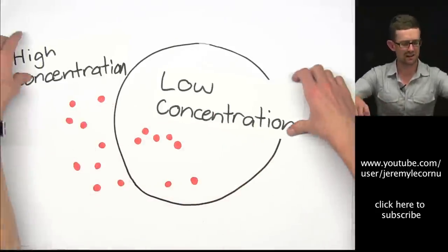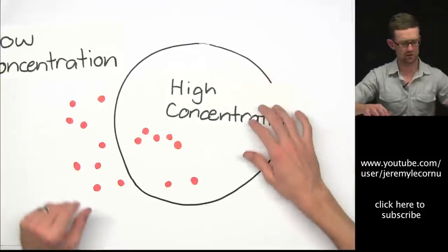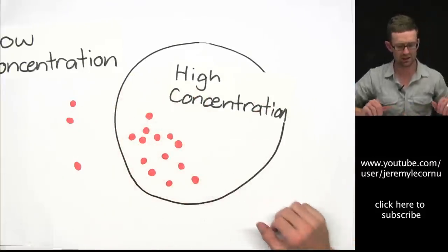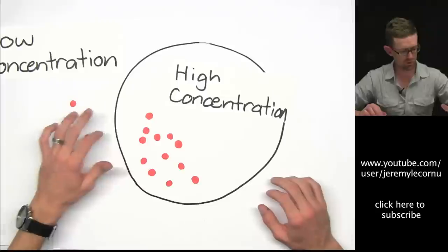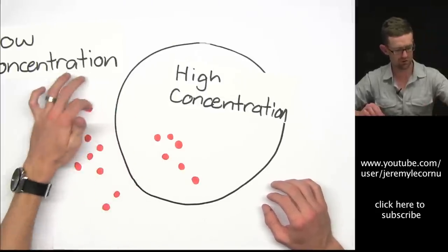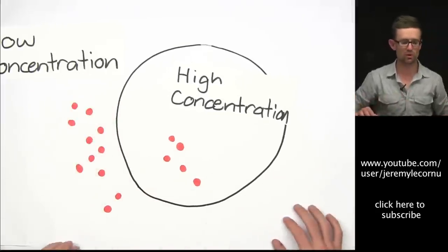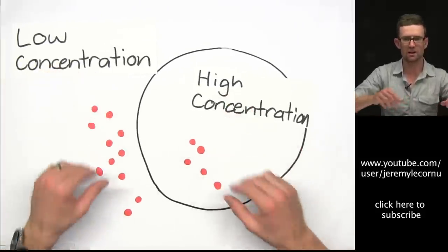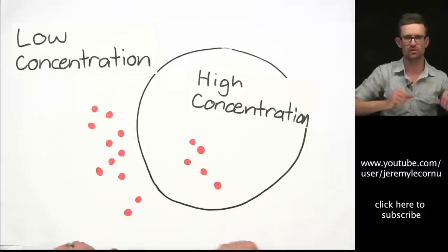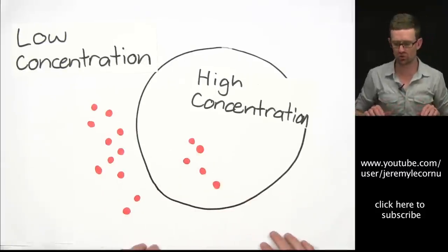Now that exact same scenario can happen reversed, where we can have particles moving from a higher concentration inside of the cell to a low concentration outside of the cell by diffusion. So it works both ways. It just depends on our concentration gradient, where the higher concentration is, where the low concentration is, and that's where our movement will occur.